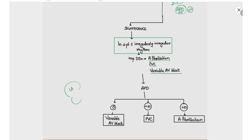In variable AV block, there is a problem in the AV node between the left atrium and left ventricle — sometimes the AV node lets the electrical signal cross and sometimes it doesn't. But every time the signal does cross, the left ventricle has enough blood to contract and produce a sufficient pulse, so in variable AV block the heart rate will be equal to the pulse rate.